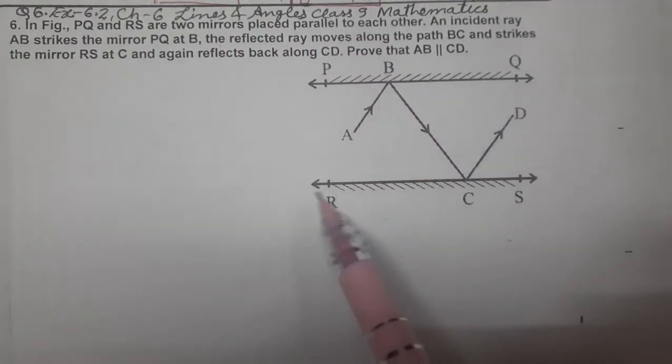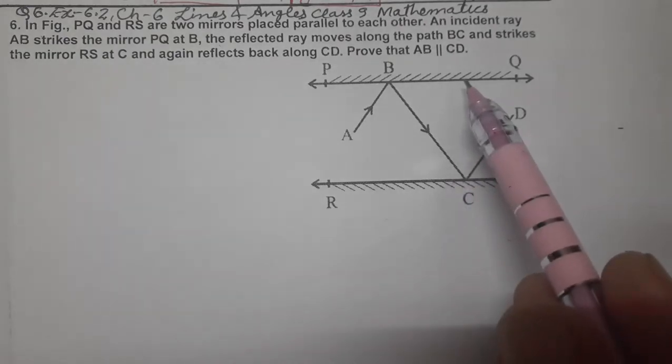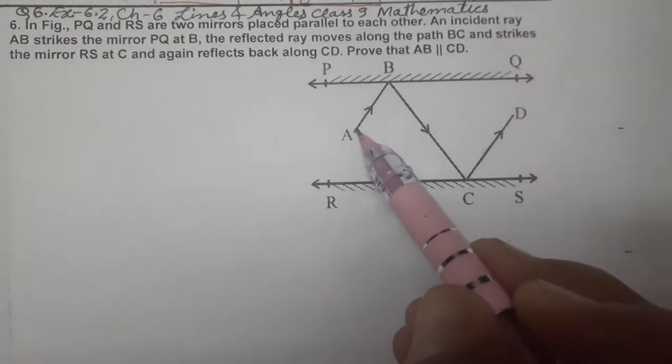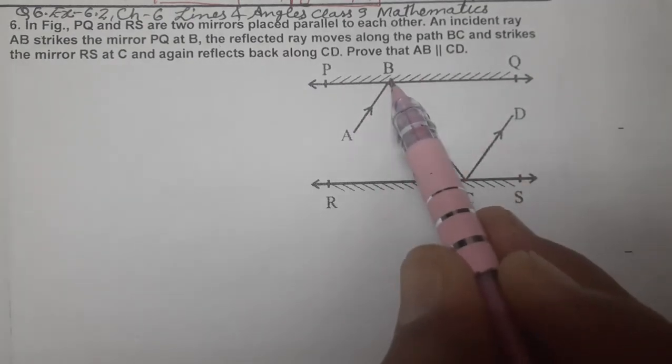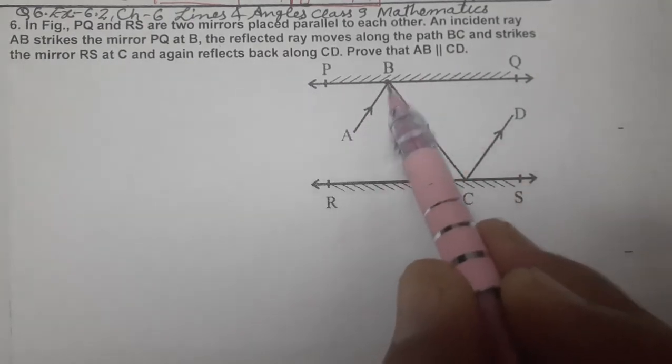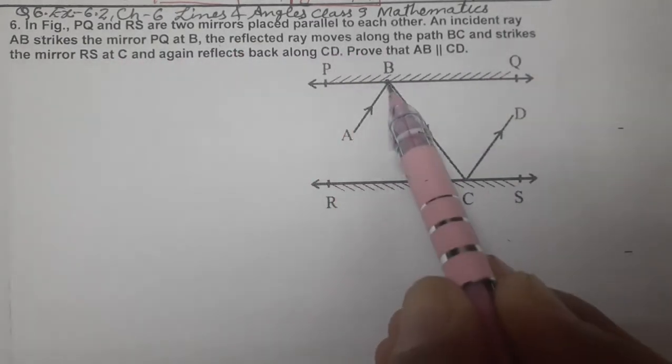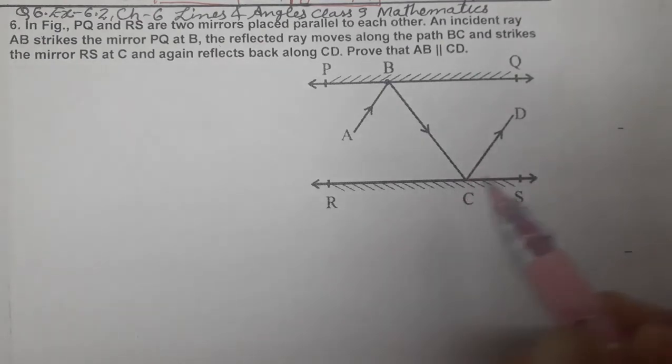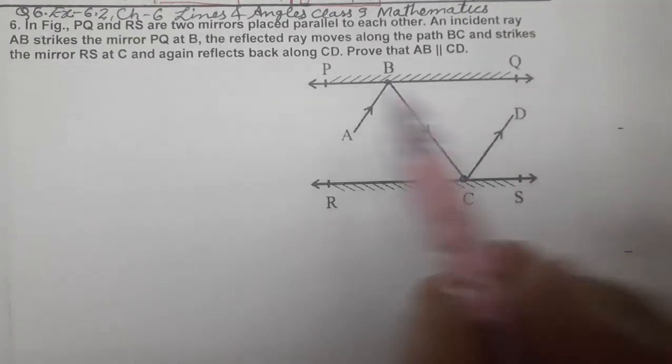So PQ and RS, these are the two mirrors which are placed parallel to each other. An incident ray AB strikes the mirror PQ at B. The reflected ray BC strikes the mirror RS at C.